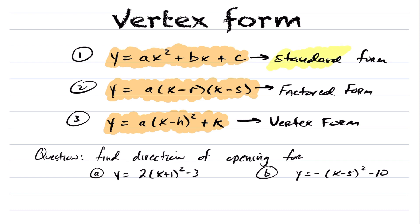Standard form is going to give you the y-intercept very easily, and we'll talk about that in a later video. Likewise, factored form is going to give you the roots. And lastly, vertex form — you guessed it — gives you the vertex of your quadratic. All three of these forms actually give you the direction of opening, and again, we'll talk about that.